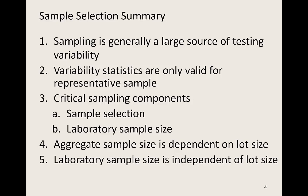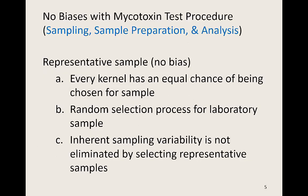The first part of the process is sample selection. In summary, sampling is generally a large source of testing variability. Variability statistics are only valid for representative samples. Critical sampling components are the sample selection and the laboratory sample size. Aggregate sample size is dependent on the lot size; however, the laboratory sample size is independent of lot size. For a representative sample, every kernel in the lot must have an equal chance of being chosen for the sample, accomplished by selecting many incremental samples throughout many locations in the lot. The selection process must be random, and even if the representative sample is selected, the inherent sampling variability is not eliminated.